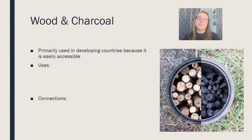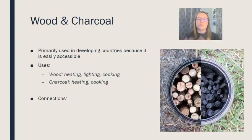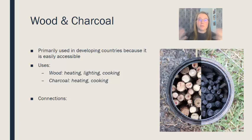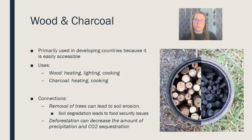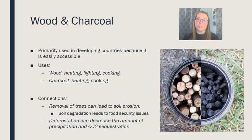Wood and charcoal are primarily used in developing countries because they're pretty easily accessible — you just walk out into the forest and chop down a tree. Uses include heating, lighting, and cooking. Charcoal is actually partially burnt woody material, so it's very similar to wood. Removal of large areas of trees can lead to soil destabilization and erosion, which can cause food security issues. Deforestation also changes the carbon cycle, resulting in less carbon being sequestered from the atmosphere.